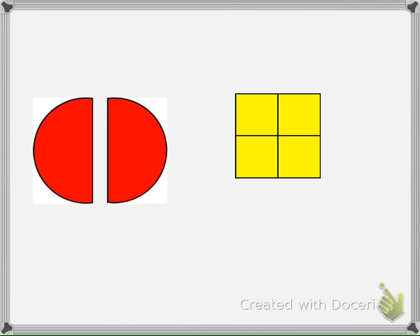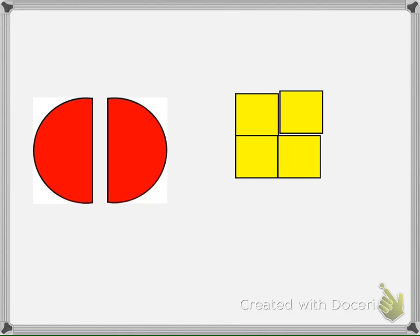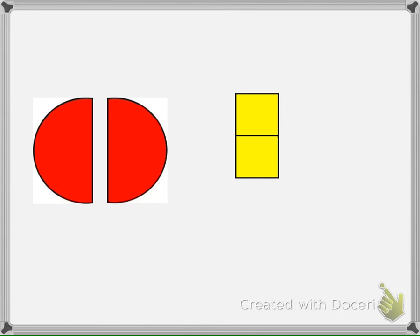The square is divided into four equal parts, so we say the square is divided into fourths. One part of the square equals one fourth — one part of four equal parts.